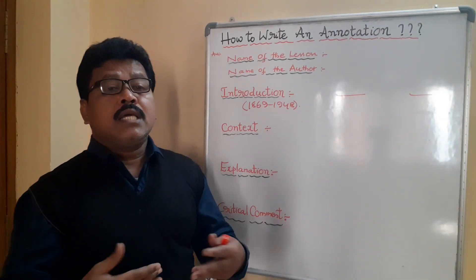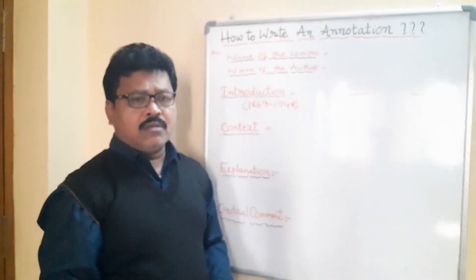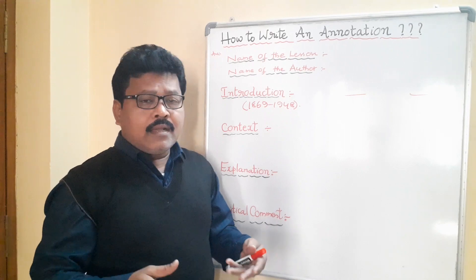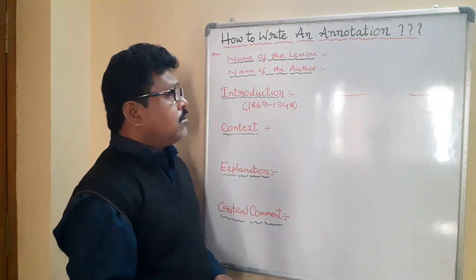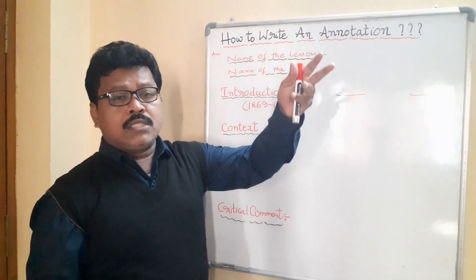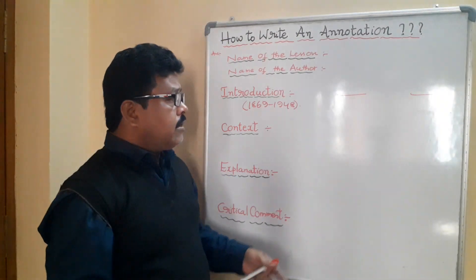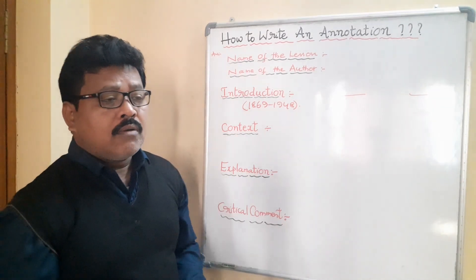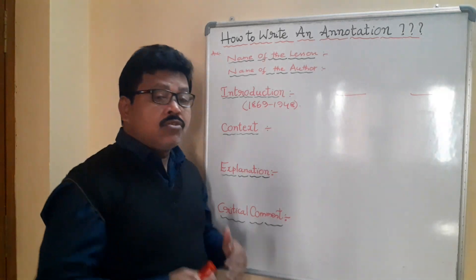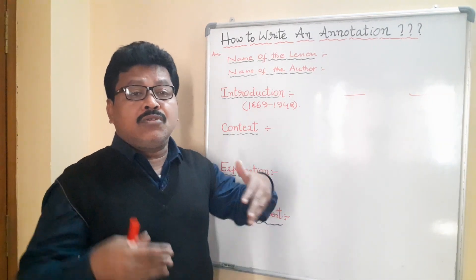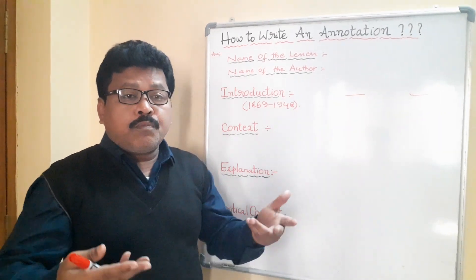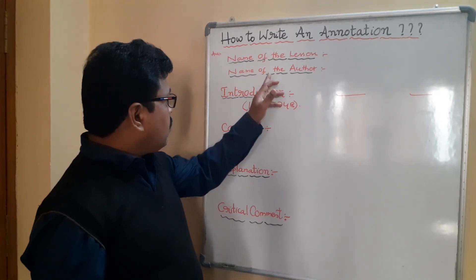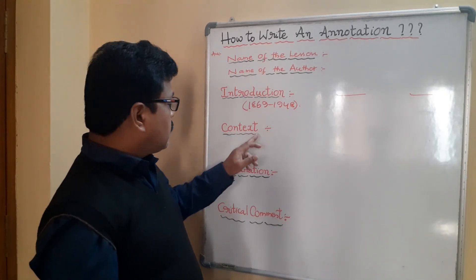The last part is the critical comment, also called general relevance — do not write 'conclusion.' Critical comment is also called critical appreciation. Write about the style of the author — is it lucid, simple, clear, or hard? Any rhyme scheme, rhymes, or imageries used in the lesson or poem? What is the moral and what is the relevance? This is your opinion, the reader's opinion — your rating of the lesson. This subjectivity is called the critical comment.